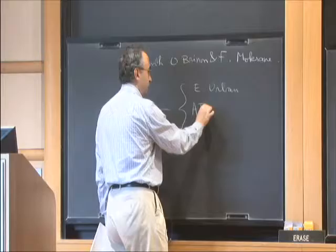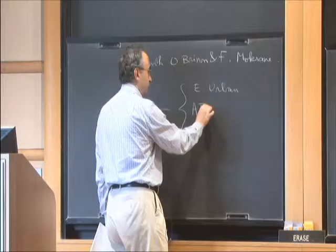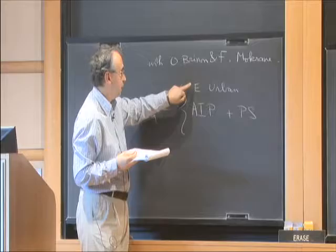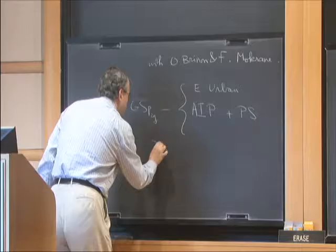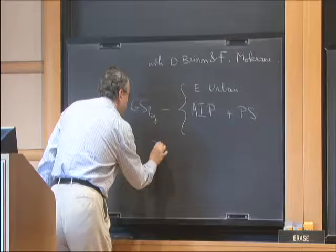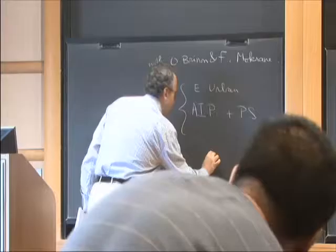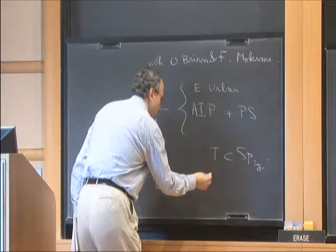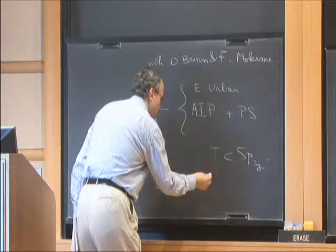We know that the eigenvariety for GSp2g has already been constructed — first by Eric Urban, and then reconstructed by Andreata, Iovita, Piloni, plus Piloni-Stroh. In their approach, they find a component of this eigenvariety corresponding to holomorphic-type eigensystems, defined as a rigid space over the weight space.